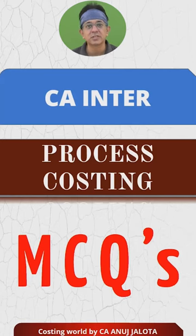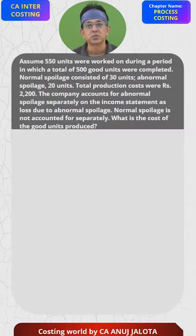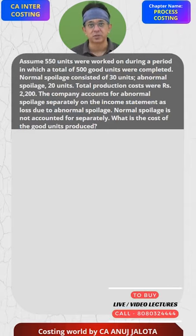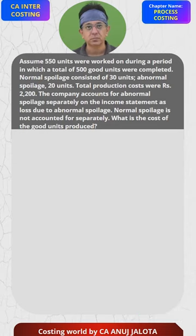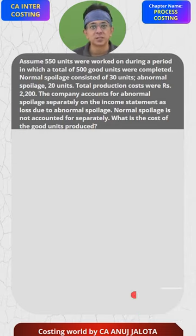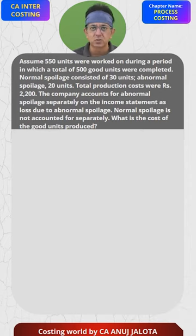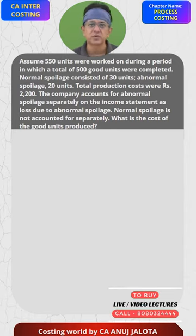CA Inter process costing MCQs. Assume that 550 units were worked on during a period in which a total of 500 good units were completed. Normal spoilage consisted of 30 units, abnormal spoilage 20 — it all tallies out of 550. 30 was normal loss, so expected output was 520 but actual output was 500.